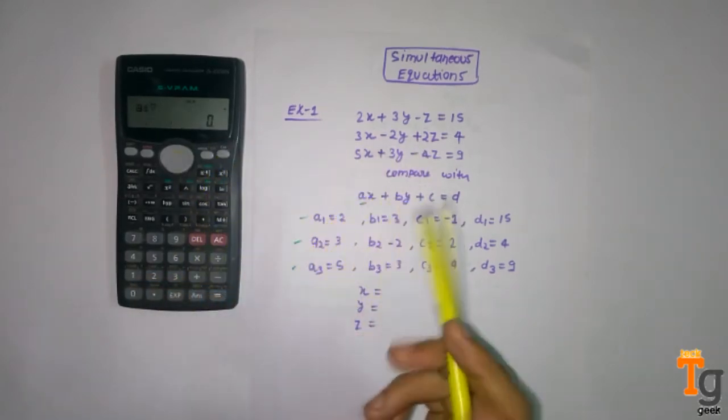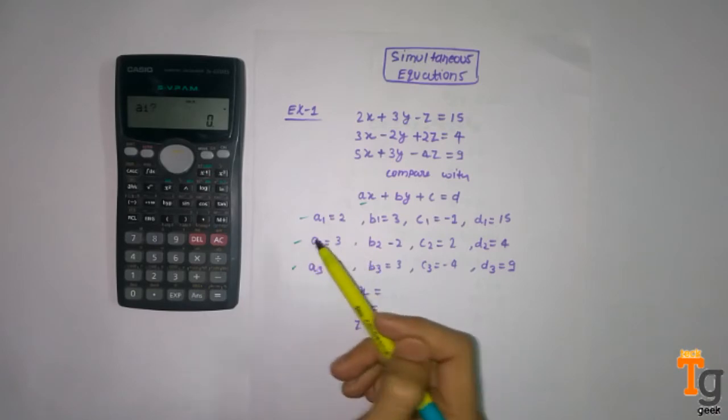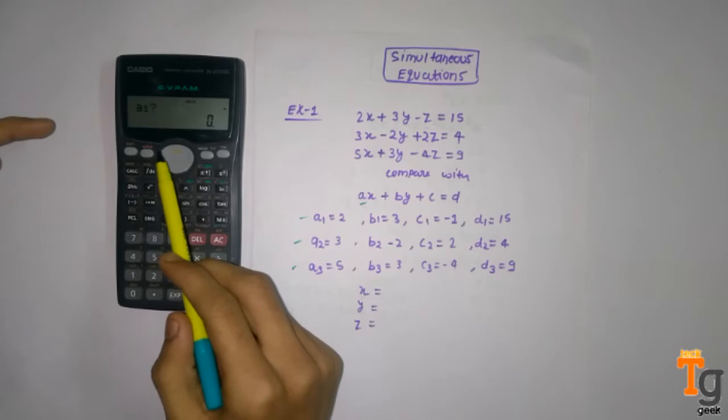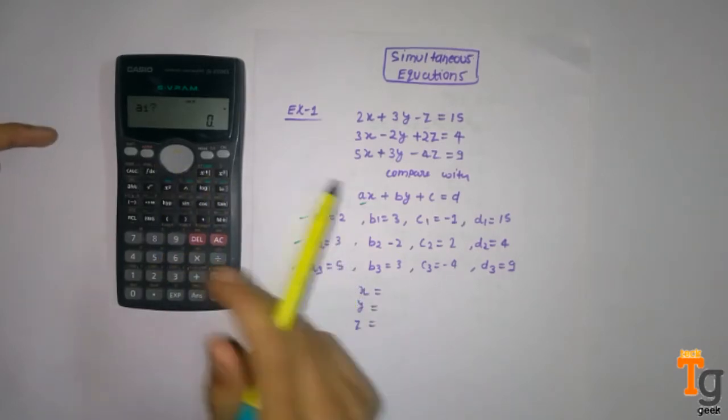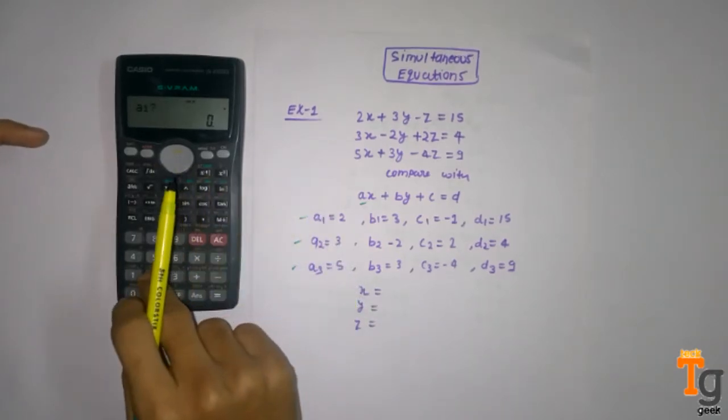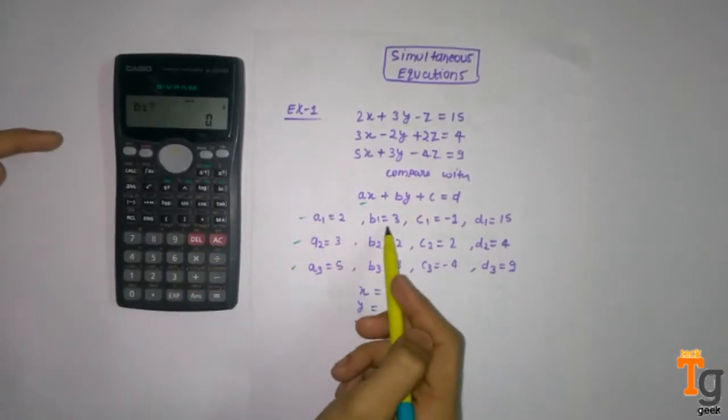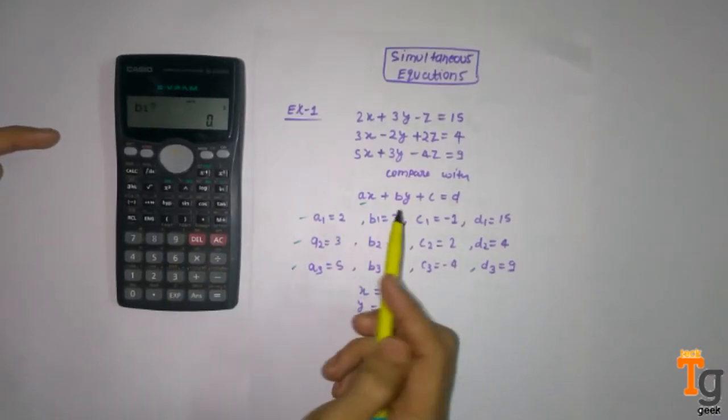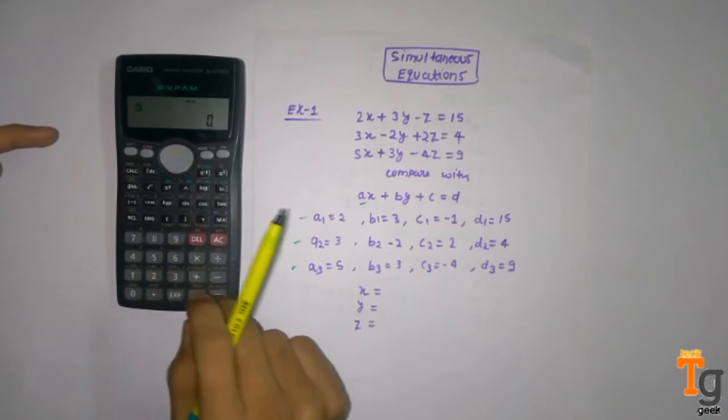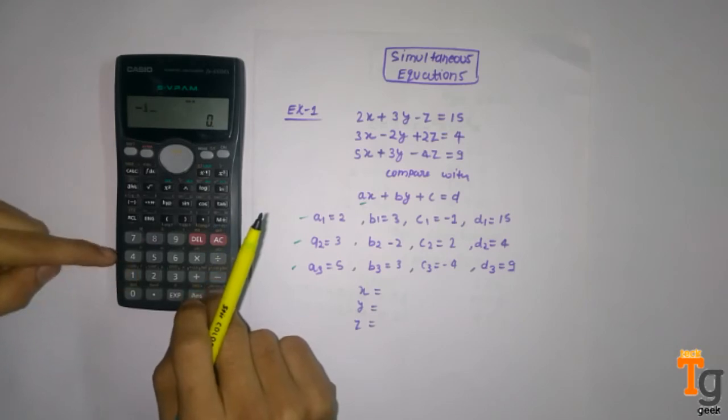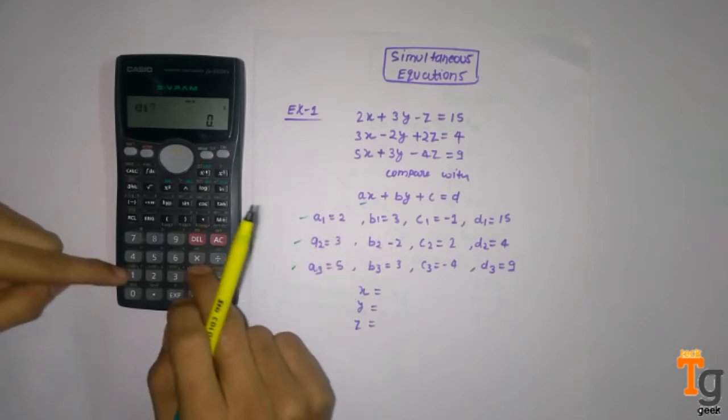One by one we will insert all the numbers using calculator. It is demanding for the value of a1 which is 2, so we will simply enter 2 and then equal. Then it is demanding b1 so we will press 3, then c1 equals minus 1, and for d1 it is 15.